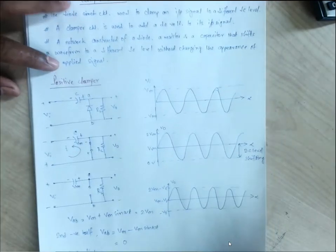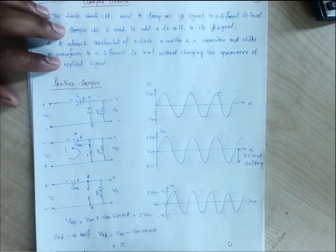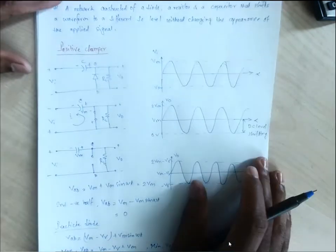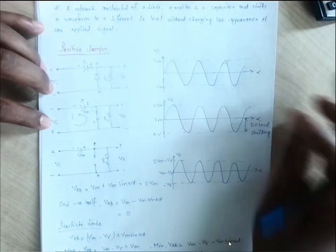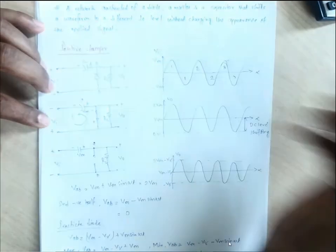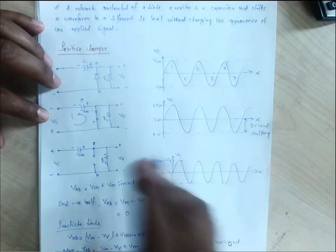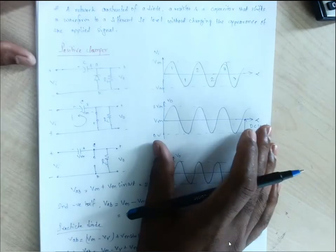For the practical diode analysis: when the diode is ON during the first negative half, it has a voltage drop Vγ. Representing the diode as voltage drop Vγ and applying KVL — the input polarity is negative-positive, current flows anti-clockwise — we get: Vi minus Vγ minus Vc equals zero. So Vc equals Vi minus Vγ. Since Vi equals Vm sin(ωt), for the maximum input, Vc equals Vm minus Vγ. That is our capacitor voltage.